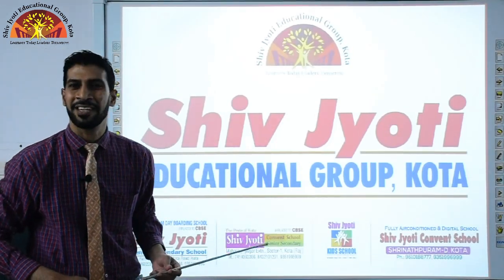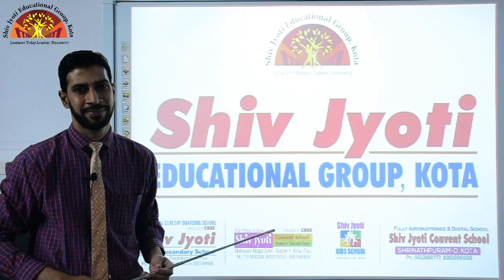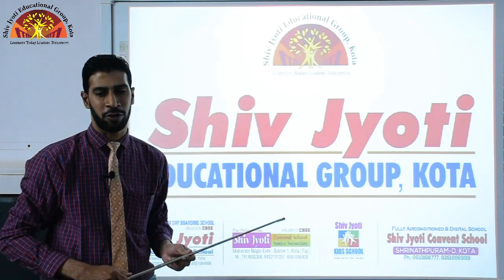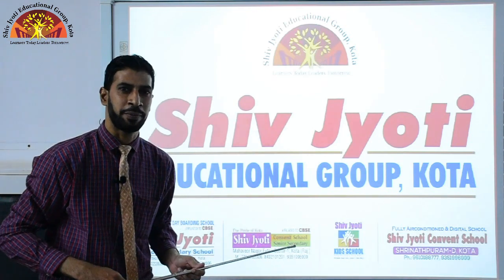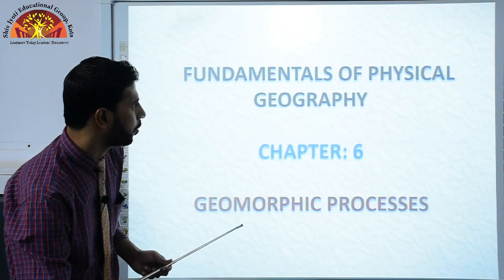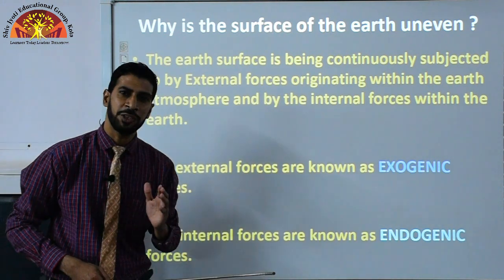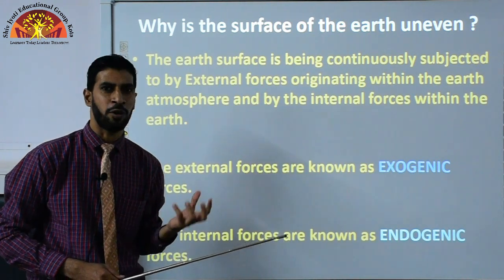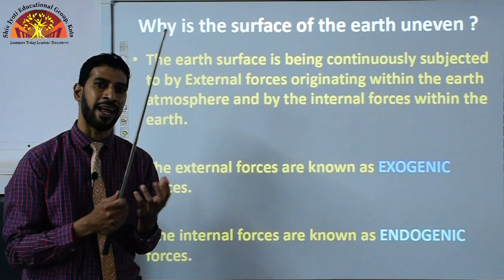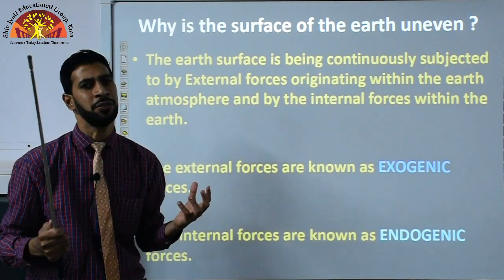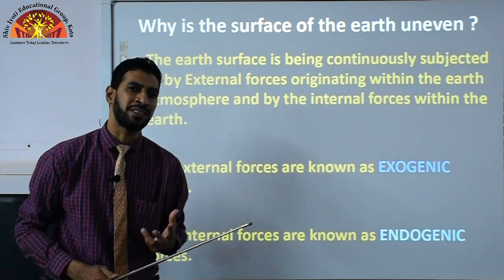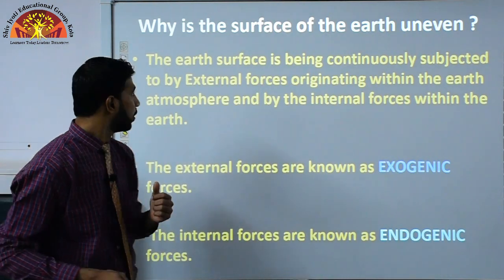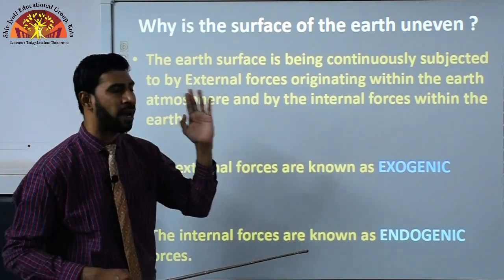Hello students, this is Rehmat Khan from Shivjyoti Educational Group. Today we are going to learn Chapter 6 from the book Fundamentals of Physical Geography, that is Geomorphic Processes. The word 'geomorphic' can be broken down into two parts: 'geo' means earth, and 'morphic' relates to land — how it is formed. In this whole chapter, we are going to discuss the processes through which the rocks and land forms are created.